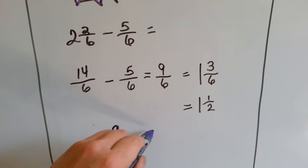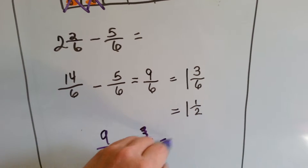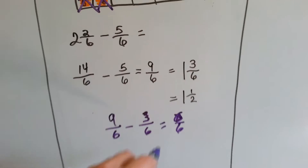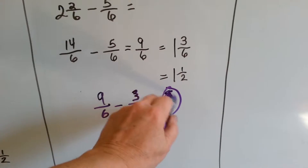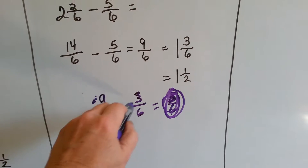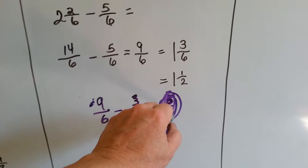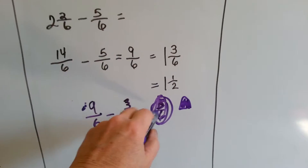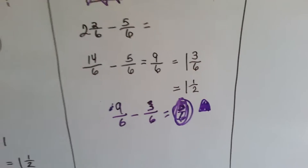Nine-sixths take away six-sixths equals three-sixths, and six-sixths is one whole. So we took one whole one out of the nine-sixths, and it left three-sixths left over. So we had one whole plus a half — six-sixths and then the three-sixths. It left one and a half.